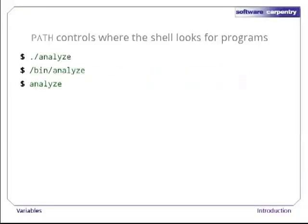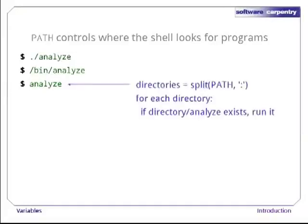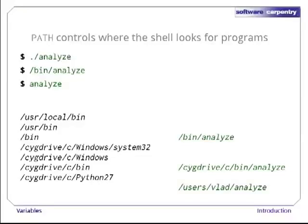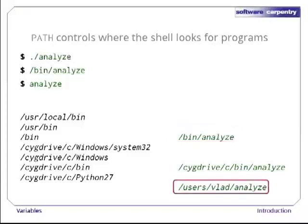If we type a command like ./analyze with a specific directory in the path, the shell runs the program that path specifies. But what should the shell do if we just type analyze? There are at least two things it could run. Its rule is simple: the shell checks each directory in the path variable in turn, looking for a program with the requested name in that directory. As soon as it finds a match, it stops searching and runs the program. On our computer, there are actually three programs called analyze in three different directories — since the shell searches the directories in order, it finds the one in /bin first.